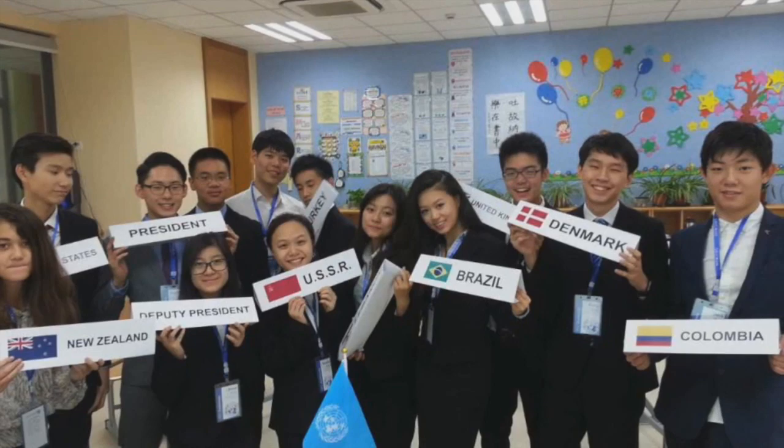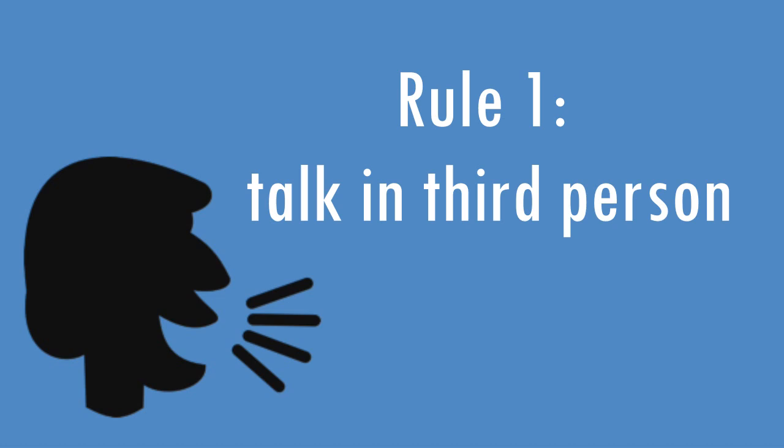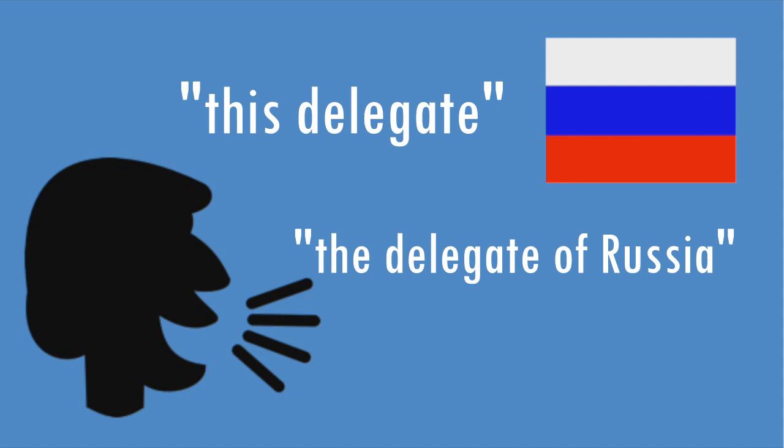Let's take an example of a universally known rule. In MNU1, you must always talk in third person. For instance, if I'm delegating the Russian Federation, I would refer to myself as 'this delegate,' 'the delegate of Russia,' or just 'Russia,' and I would debate in such manner — 'Russia believes that it is important to call a ceasefire.'